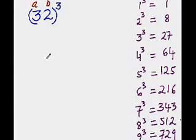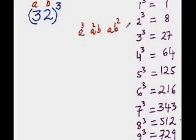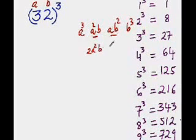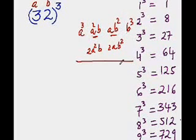Now see the pattern in which we are going to put the digits. So it would be A cube, A square B, AB square and B cube. In the next line we are going to double up these two numbers. So 2 times A square B and 2 times AB square, then we simply add the numbers.